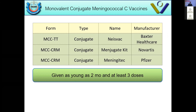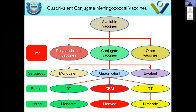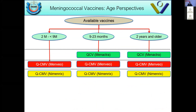When talking about quadrivalent conjugate meningococcal vaccines, we mainly discuss three: Menactra, Menveo, and Nimenrix. This lecture covers all vaccines in a neutral manner. They cover the same serogroups but differ in their carrier protein — Menactra uses diphtheria toxoid, Menveo uses CRM, and Nimenrix uses tetanus toxoid. All three are approved for nine months and above.